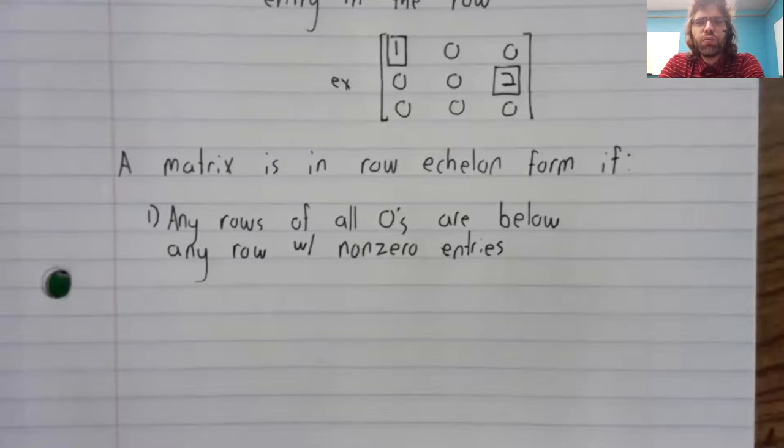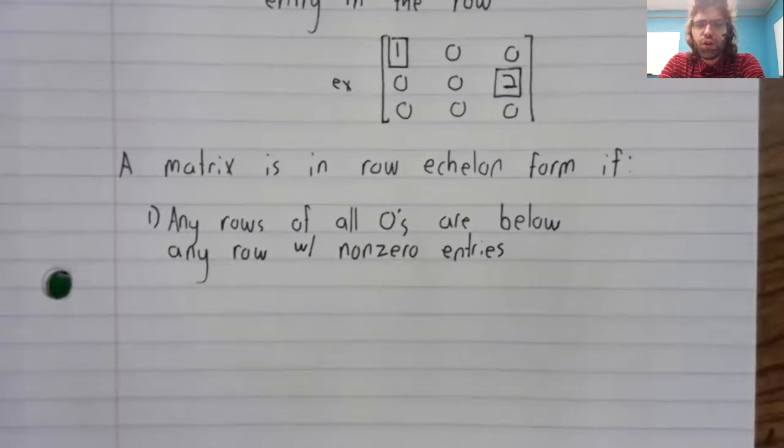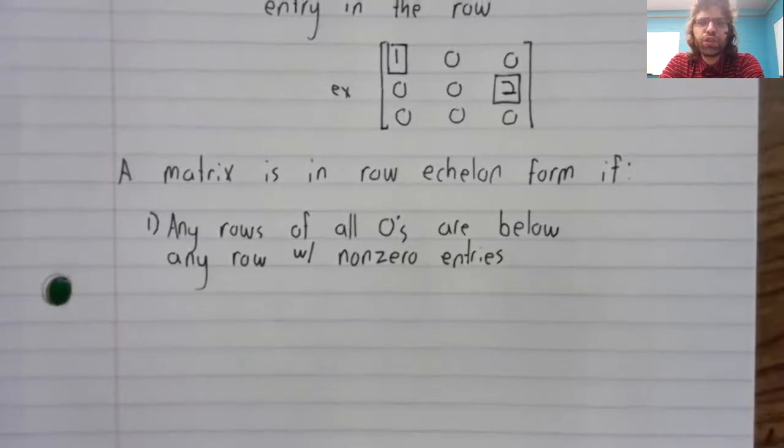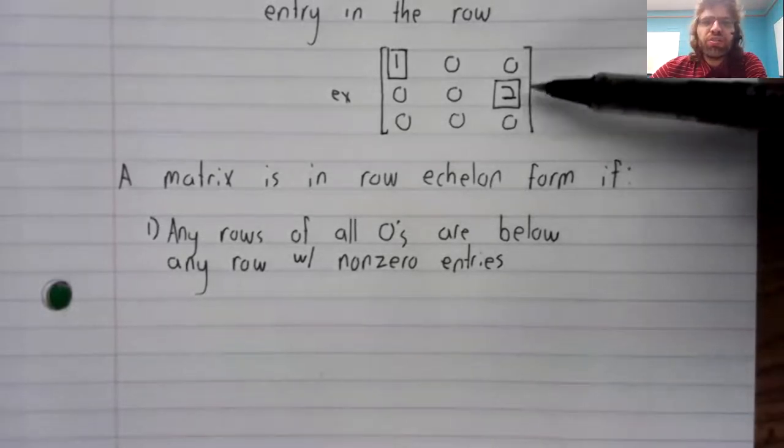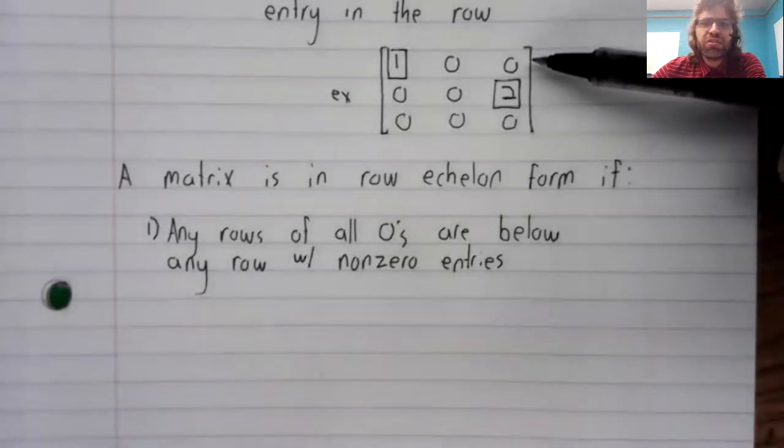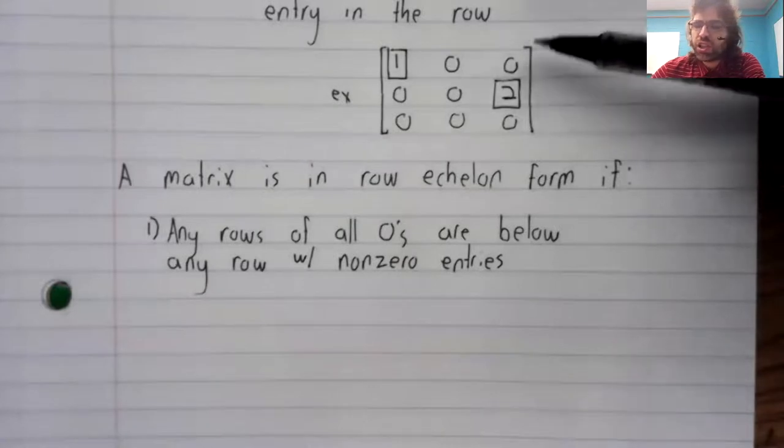any row of all zeros is below any row with non-zero elements. For example, this matrix satisfies this condition.